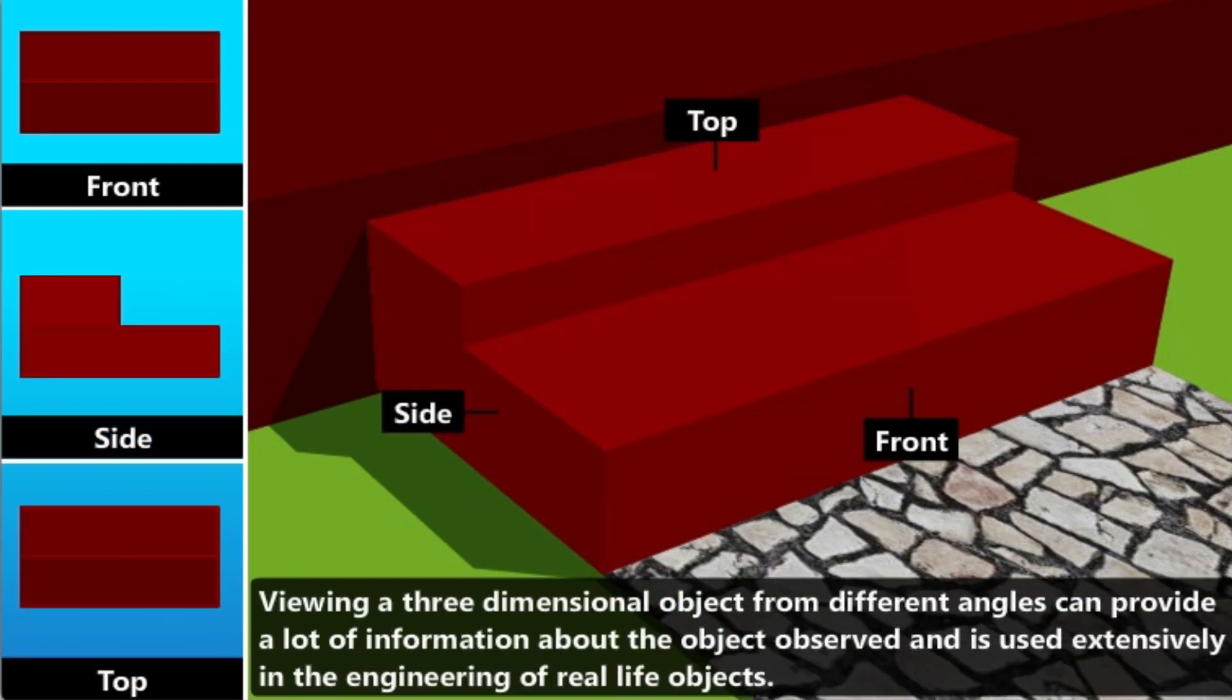Viewing a three-dimensional object from different angles can provide a lot of information about the object observed and is used extensively in the engineering of real-life objects.